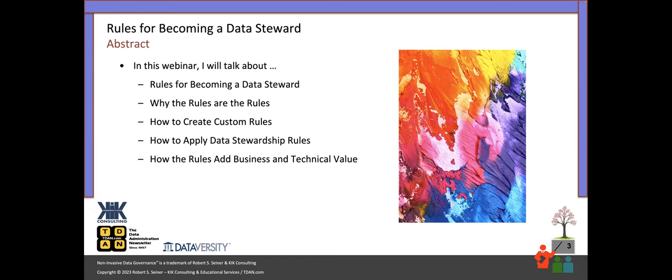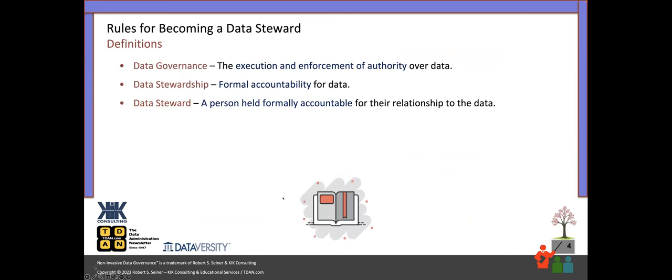So what are we going to talk about today? The first thing I'll do is outline for you eight rules for people to become data stewards — or how to associate or recognize people in the organization as being data stewards. Then I'll talk about why those rules are specifically the rules, and how you can figure out when determining who your stewards are, how to create some custom rules for yourself and your organization. We'll also talk about how to apply the stewardship rules across the organization and how the rules add value. Let's start by talking about some definitions I typically use.